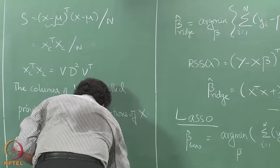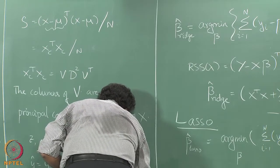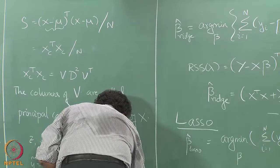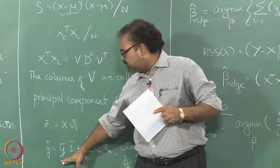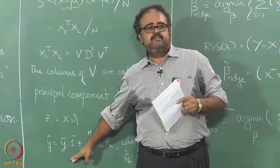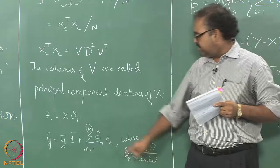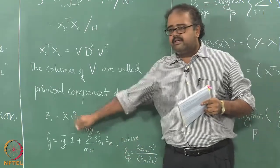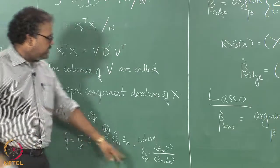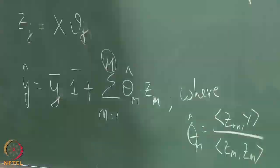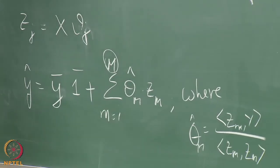Working with centered data, you automatically add in your intercept, which is y-bar. If you choose to take the first M principal components, your prediction will be theta_m times Z_m, where Z_m is the projected data and theta_m is obtained by regressing y on Z_m — a univariate regression. This gives you the principal component regression fit.